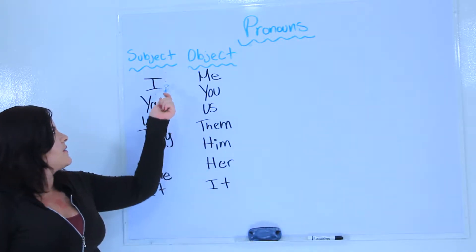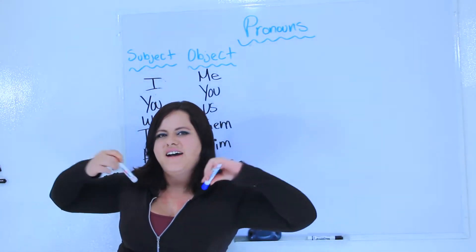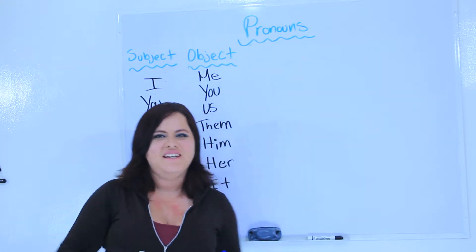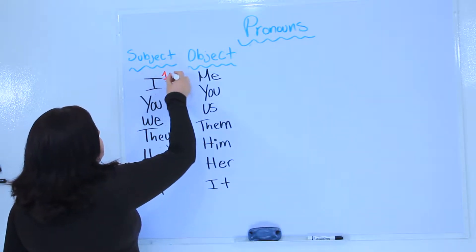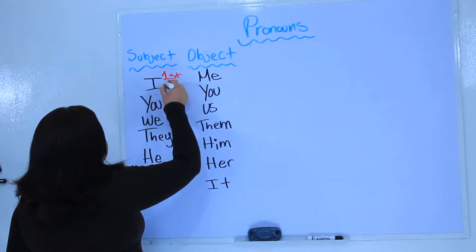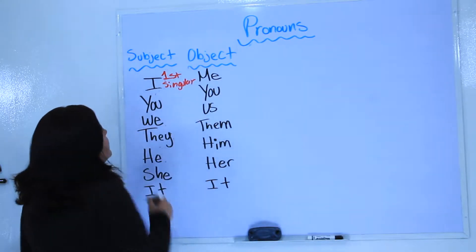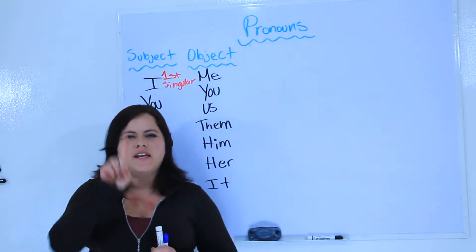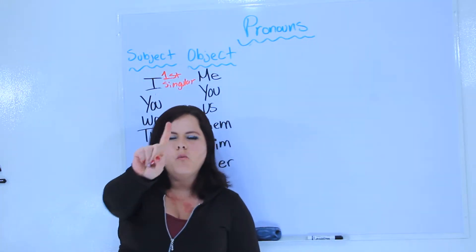So the first one we have here on the board is I. For example, I am Fabi. We call this first person singular. And what does singular mean? Singular means one. So I'm talking about me — I'm talking about one person. I.